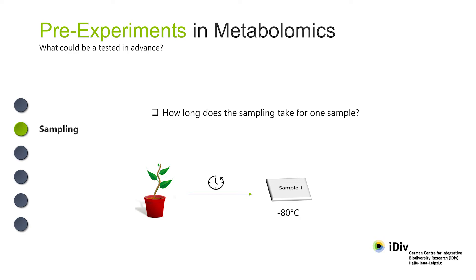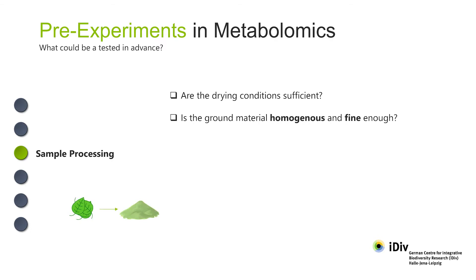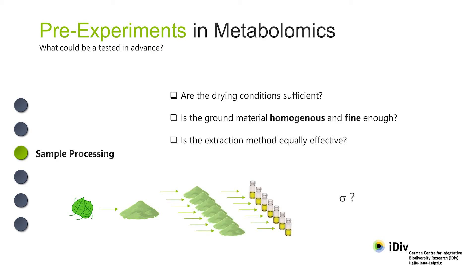Timing your procedures in a preliminary experiment will lead to better and more realistic planning. Test your sample processing: you need to find out what the technical variability is and how robust your methods of sample processing are. To do this, we recommend processing several samples of material in a preliminary experiment. This will help answer the following questions: are the drying conditions enough to ensure the samples are water-free? Does your grinding method produce homogeneous and finely ground material? And is your extraction method equally effective for all samples?